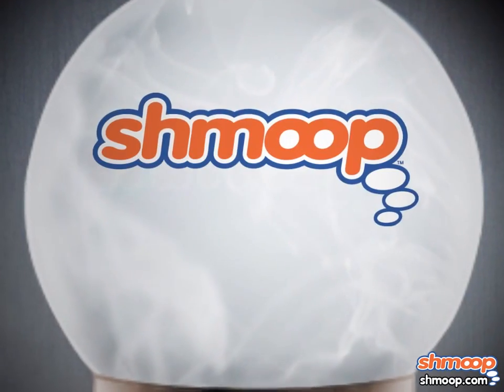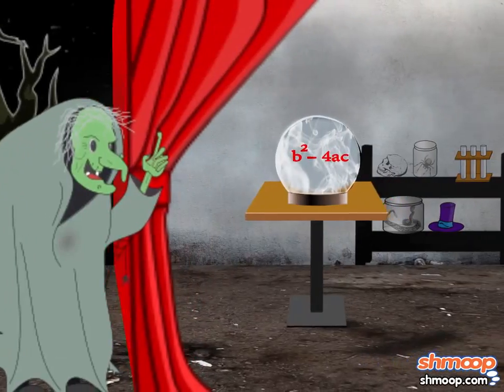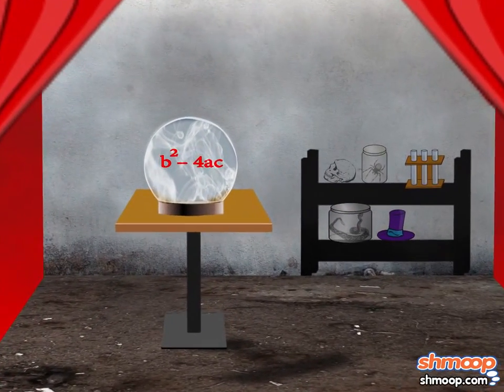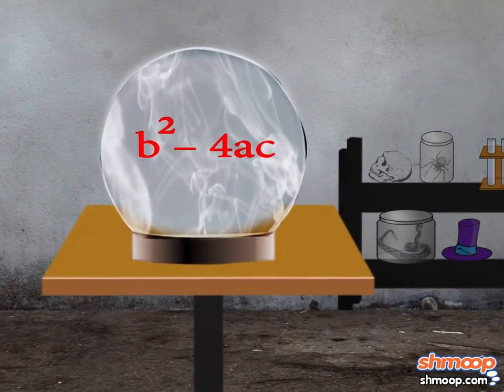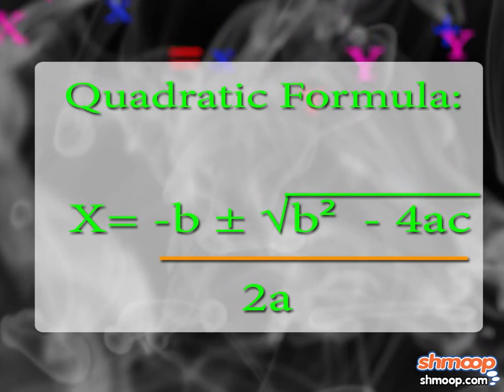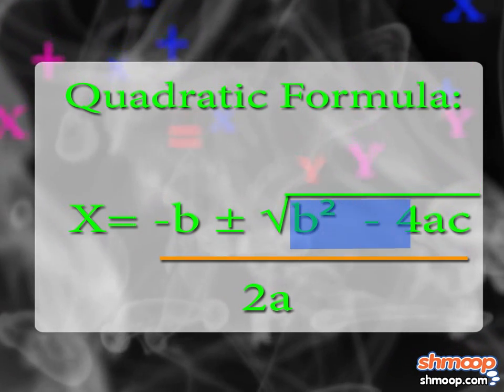Using the Discriminant, a la Shmoop. It's never okay to discriminate. But you can definitely use the discriminant to help answer some of life's most difficult questions. In the quadratic formula, b squared minus 4ac is the discriminant.